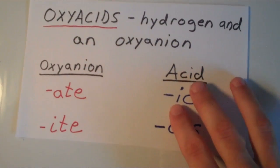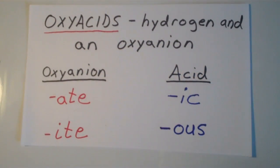Now let's talk about oxyacids. Oxyacids are composed of hydrogen and an oxyanion. So what is an oxyanion? I'm talking about polyatomic ions that contain oxygen. So nitrate, sulfate, phosphate, perchlorate—a bunch of different polyatomic anions have oxygen in them, and therefore are oxyanions.